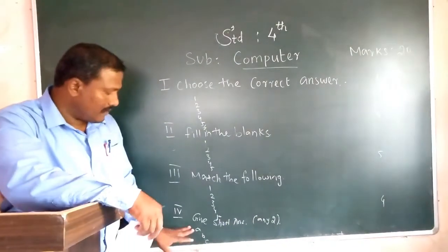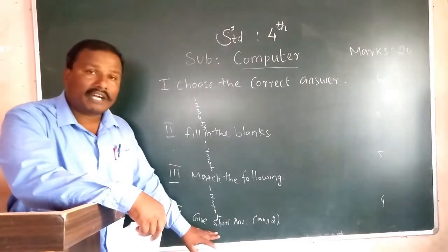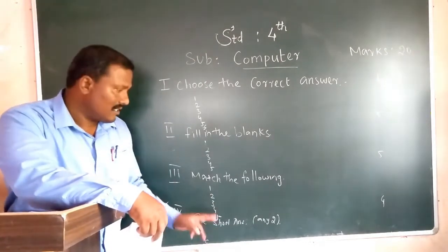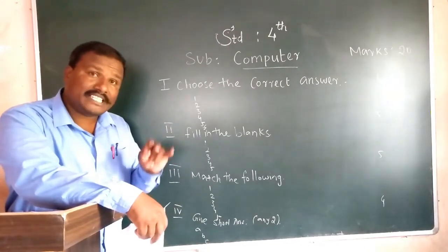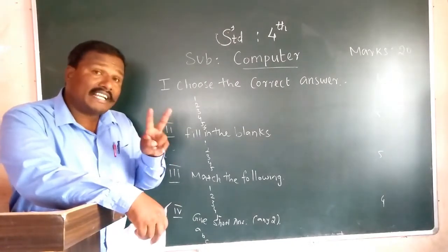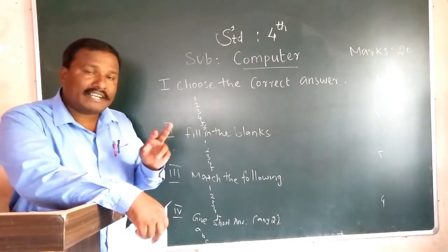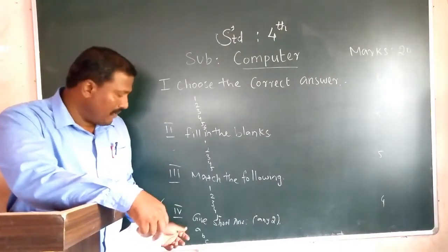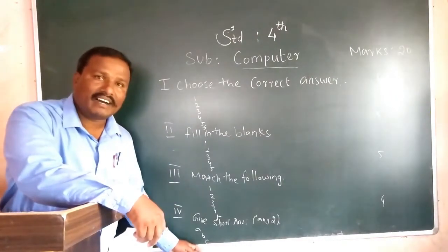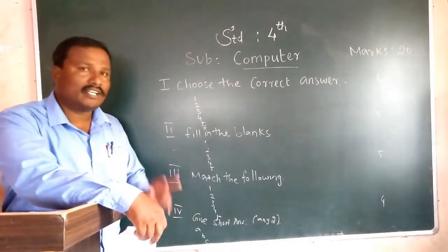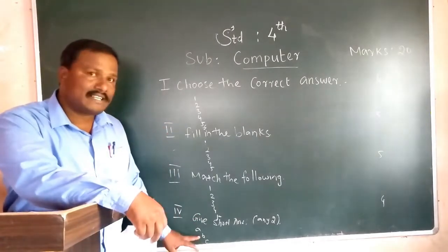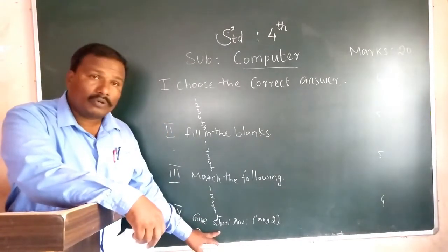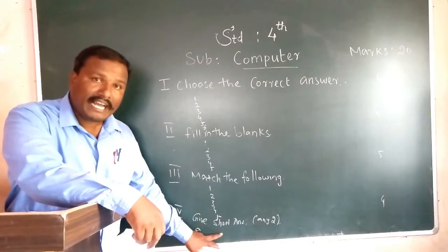Then Roman numeral IV: Give short answer — only two or three line answers. I give three questions: A, B, and C. Write any two. Don't write all three questions — write only two. You can choose A and B, or B and C, or any combination. Each question carries marks, so write only two questions.